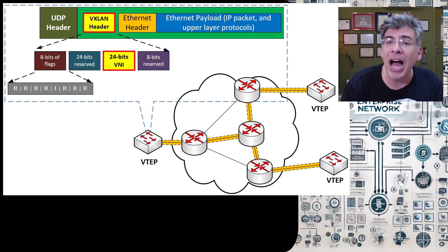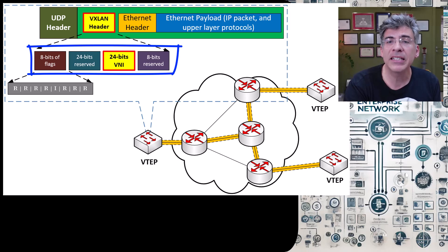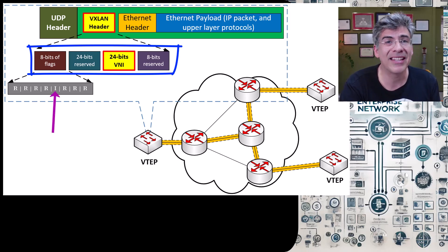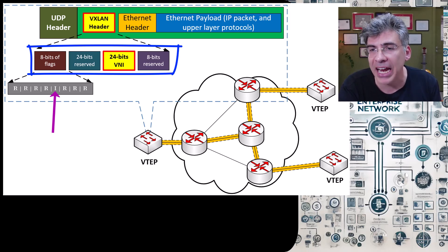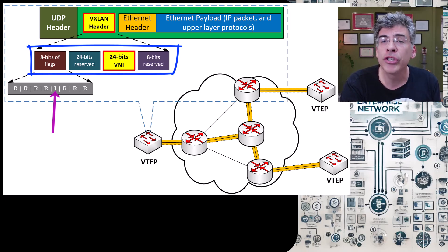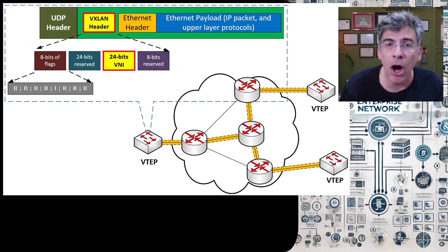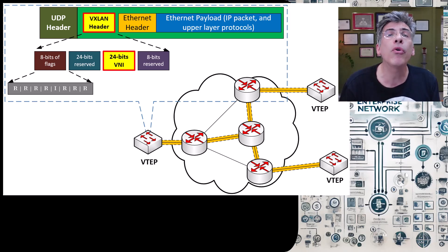I'd like to emphasize the information maintained within the VXLAN header. This header is 8 bytes in length. The first byte contains 8 flags, where the I flag — the fifth flag — must always be set to 1 for any valid VNI. The other 7 bits, designated by the letter R, are reserved fields for future use and must be set to 0 on transmission, and must also be ignored by the receiving VTEP.